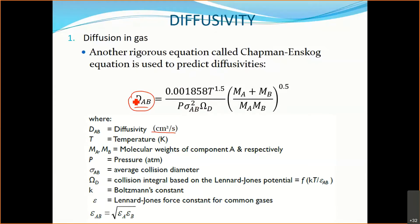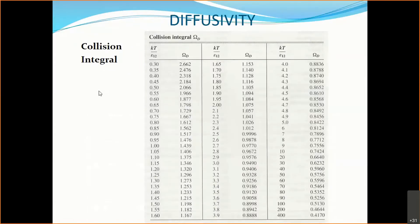Whenever you use this equation, whatever value you get, the unit for your diffusion coefficient is cm² per second. If you use the wrong unit for temperature or pressure, you will not get this unit. You can try substituting all the units for each term and doing unit cancellation — if you follow all the units correctly, you will get cm² per second. These are also the ways for you to find the value of omega_d.